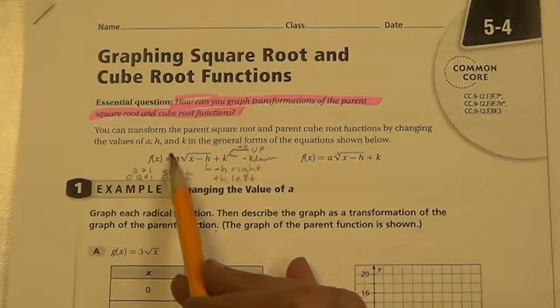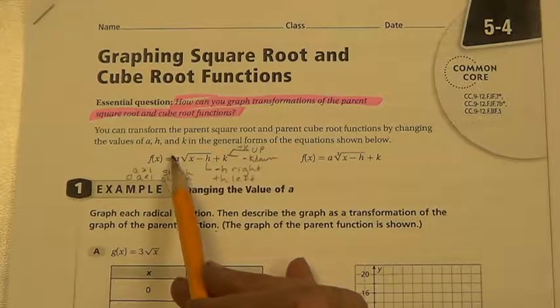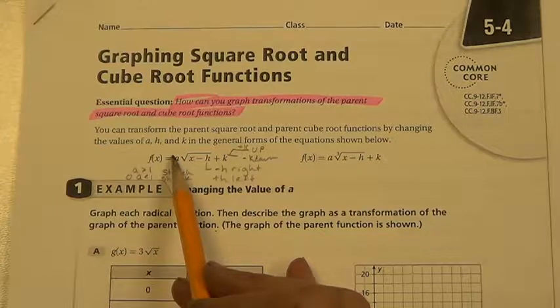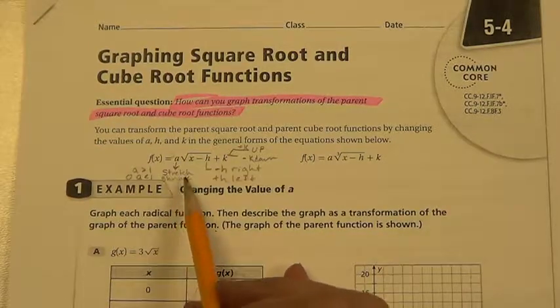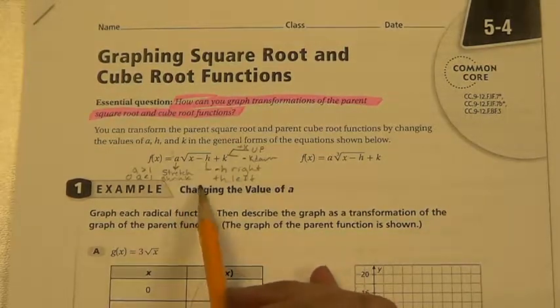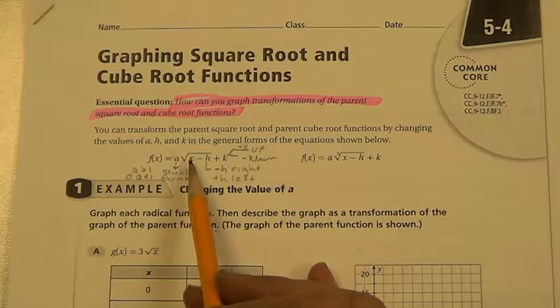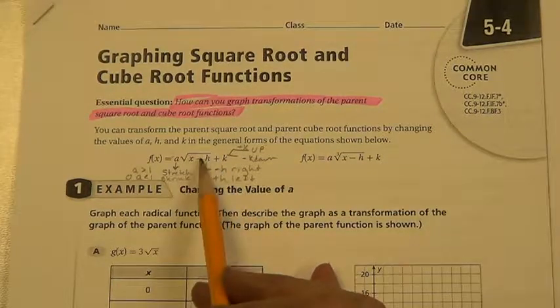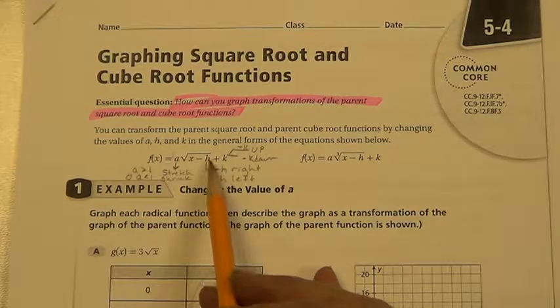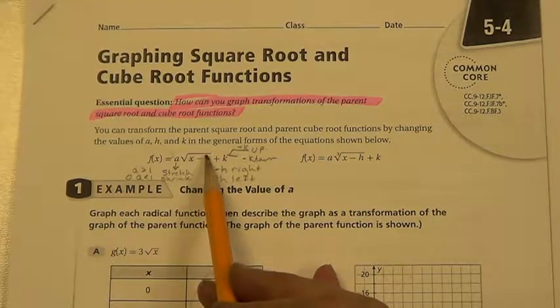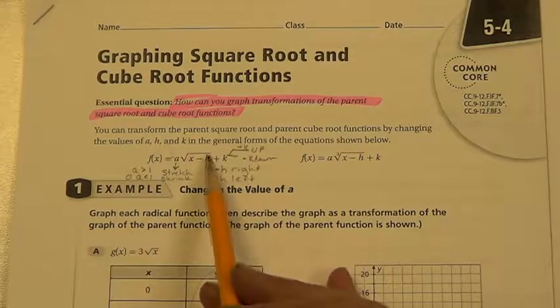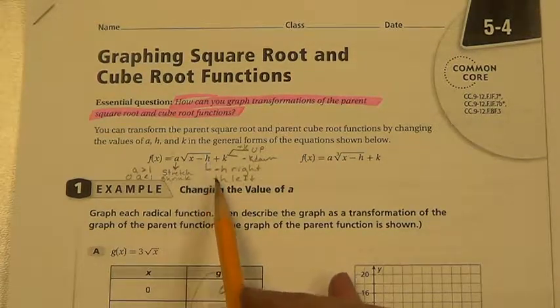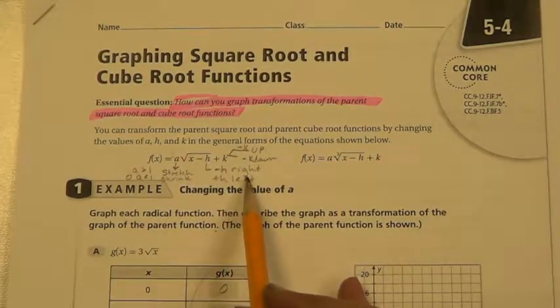We should have a plus or minus out front, because a minus out front causes a reflection. A plus, we'll just leave it as regular, it won't reflect. Then we have x minus h, a negative h here, which actually is a positive h, but when you plug it in, it looks like a minus h. It goes to the right. A plus h is actually a negative h. It goes to the left.